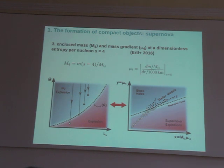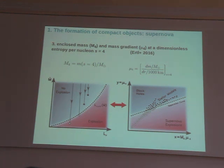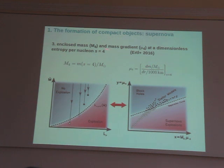There are even more complicated models. Ertl and collaborators propose that the compactness is not good enough to predict the final fate of a supernova, and suggest that a good model will rely on two parameters: M4, which is the enclosed mass, and mu4, which is the mass gradient at a dimensionless entropy per nucleon S equal to 4. I will not discuss it in detail here — if you have questions we can talk about it later.